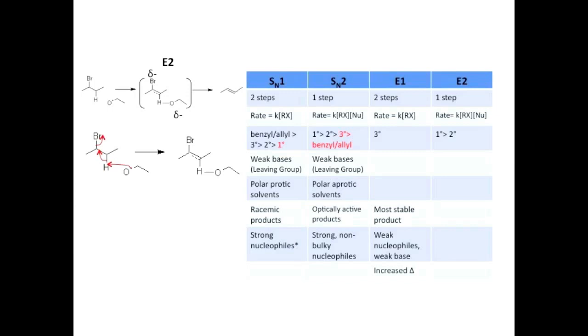We can ignore leaving groups and solvent for the MCAT. Just like E1, E2 follows Zaitsev's rule, so the most stable alkene will be the major product. This also means that trans will be favored over cis. Cis just have more steric strain than trans do, which makes them a little bit less stable.